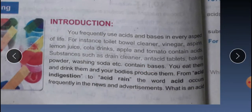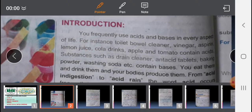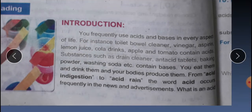As you know, in our daily life we use a number of acids, bases and salts. For example, we use lemon juice, cola drinks, apple, tomato — these contain acids. Substances such as drain cleaner, antacid tablet, baking powder, washing soda — these are basic in nature. We can eat them, we drink them, and our bodies also produce some acids and bases.